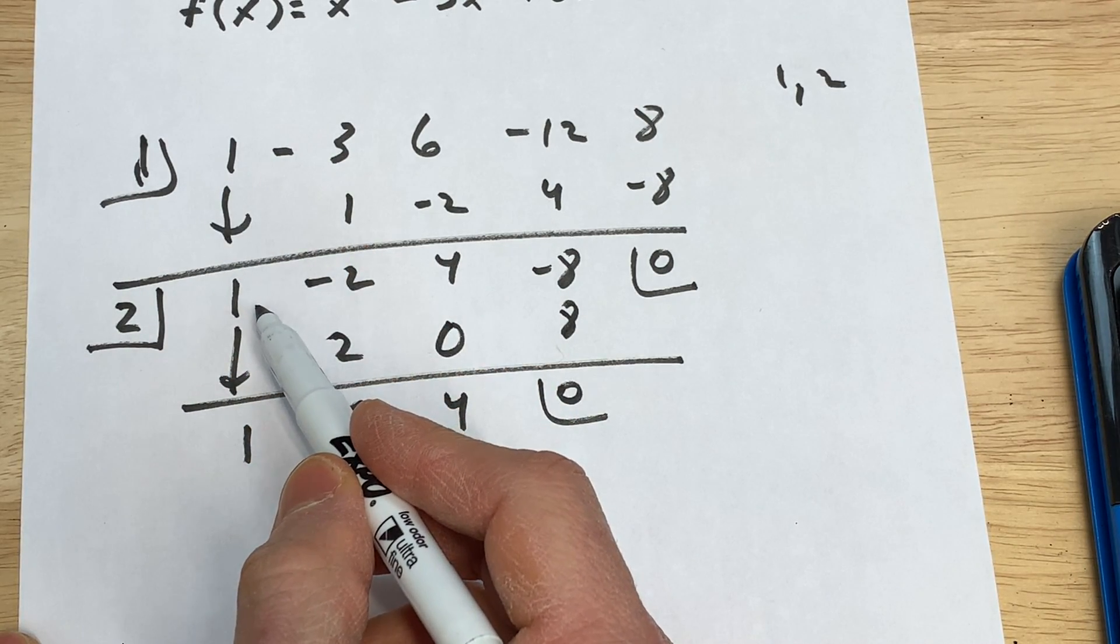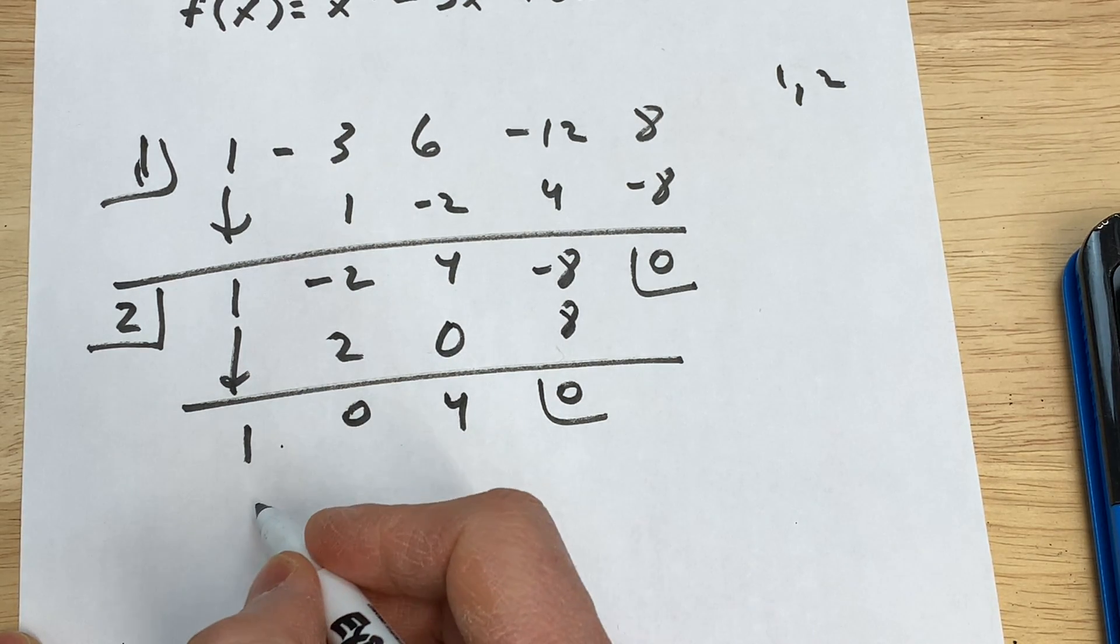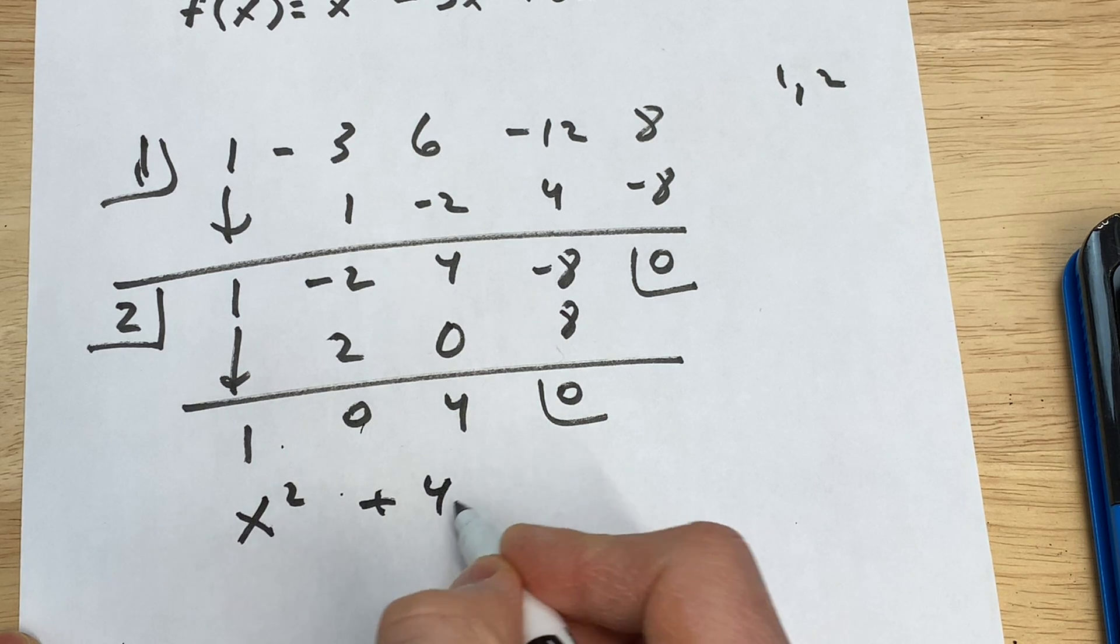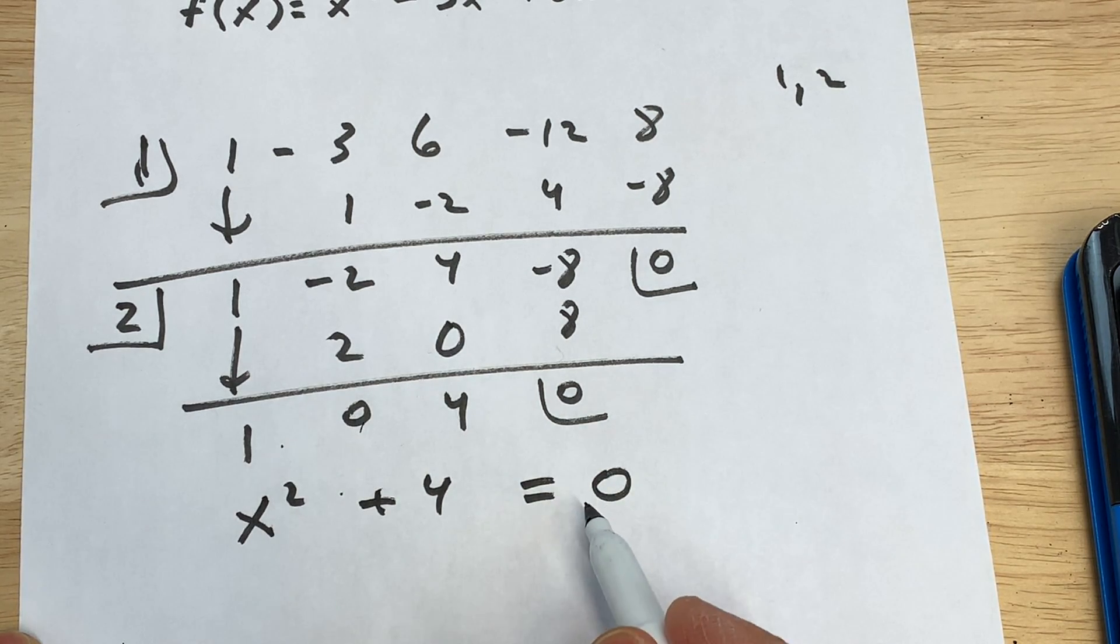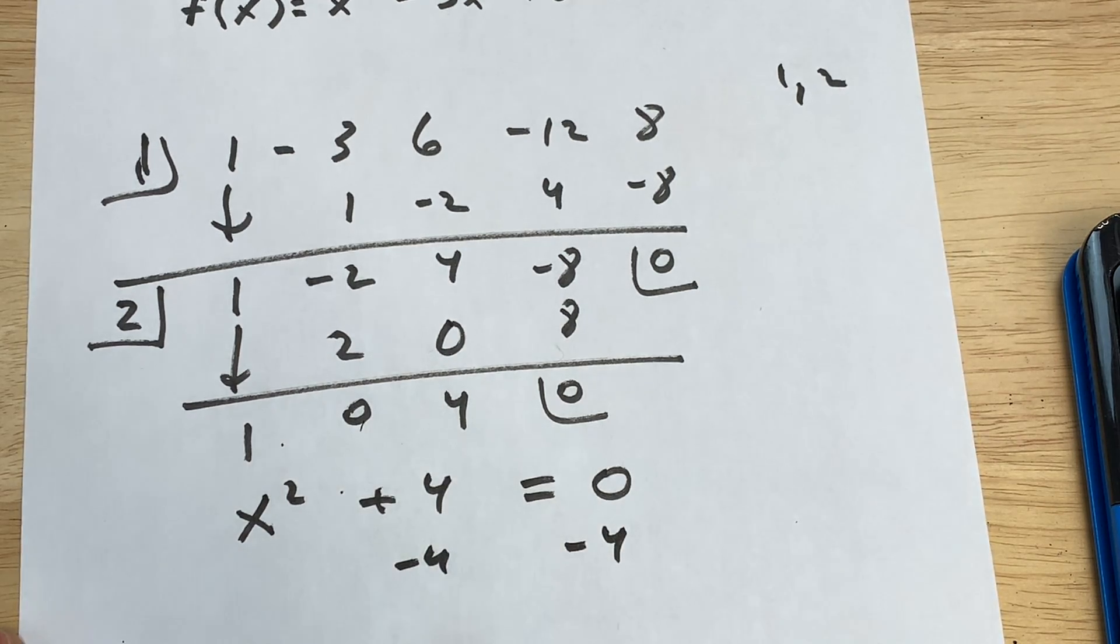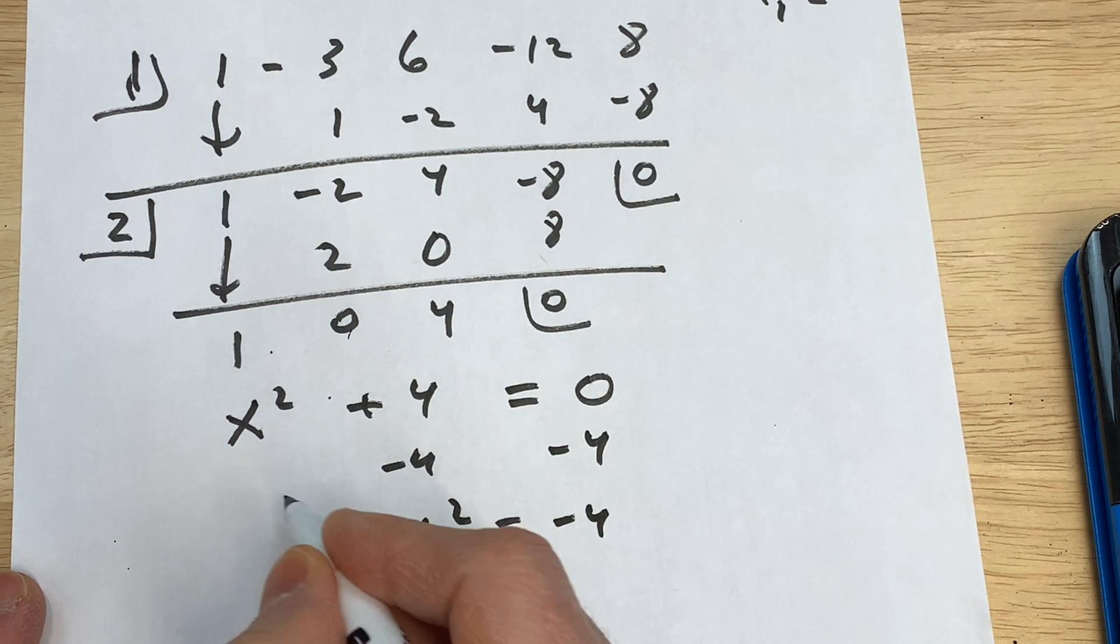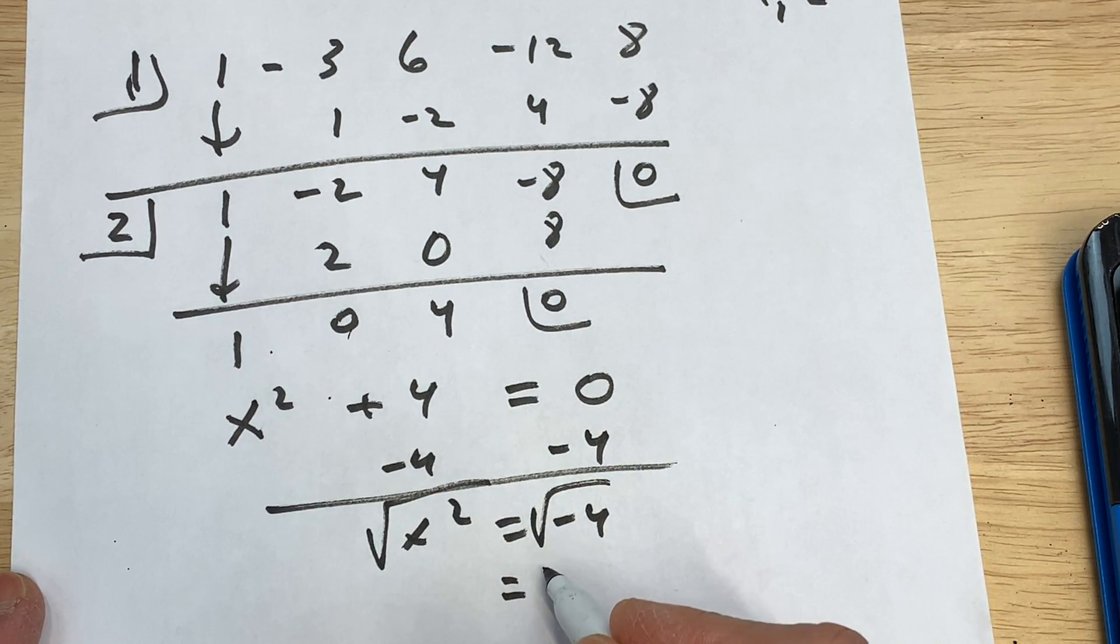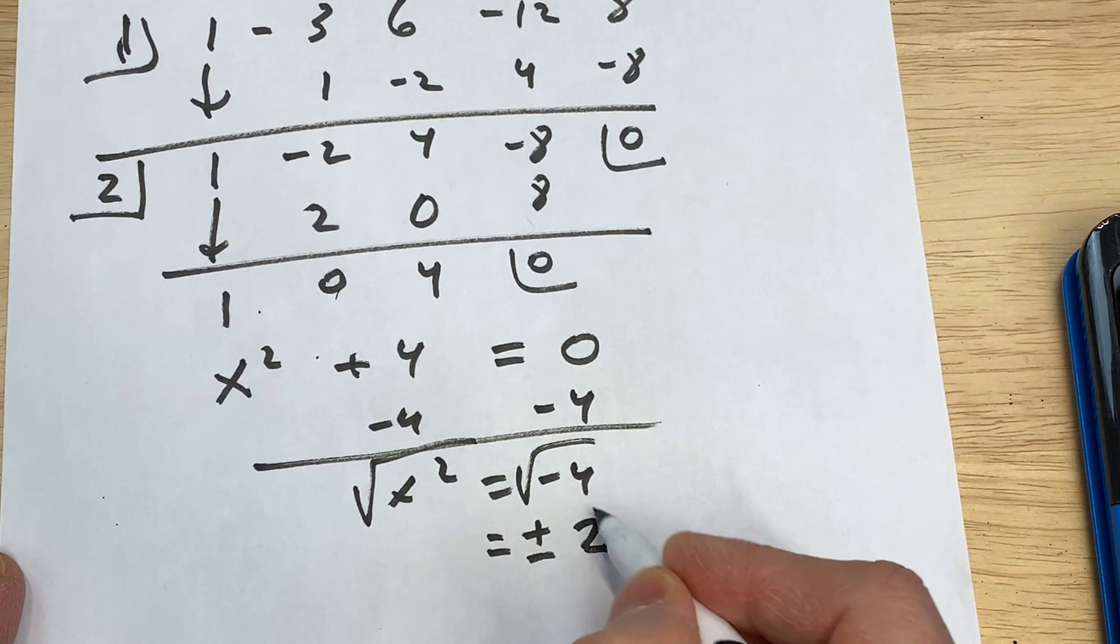And we started with x to the fourth, every time we do the synthetic division it goes down by one degree, so it's x cubed, now it's x squared. So what we have here is 1x² plus 0x plus 4, and if we set that equal to zero we can find the remaining zeros. So I'm going to subtract 4 from both sides and that's x² equals negative 4. I can take the square root of both sides. Remember when you do that you get two answers: plus or minus square root of 4 is 2, square root of the negative 1 gives us the i.